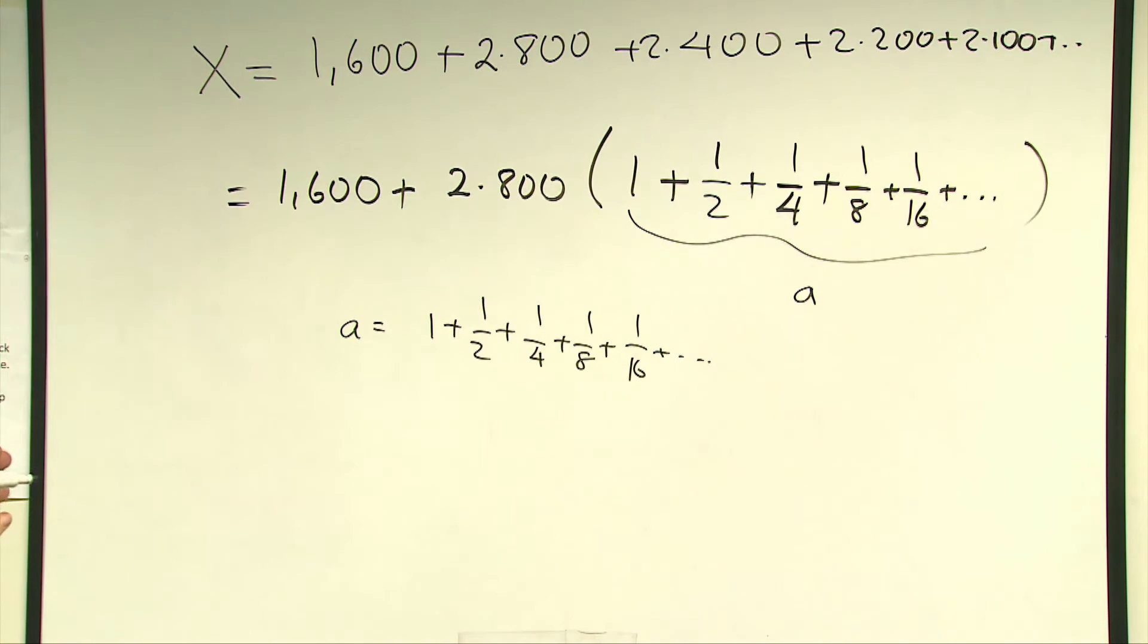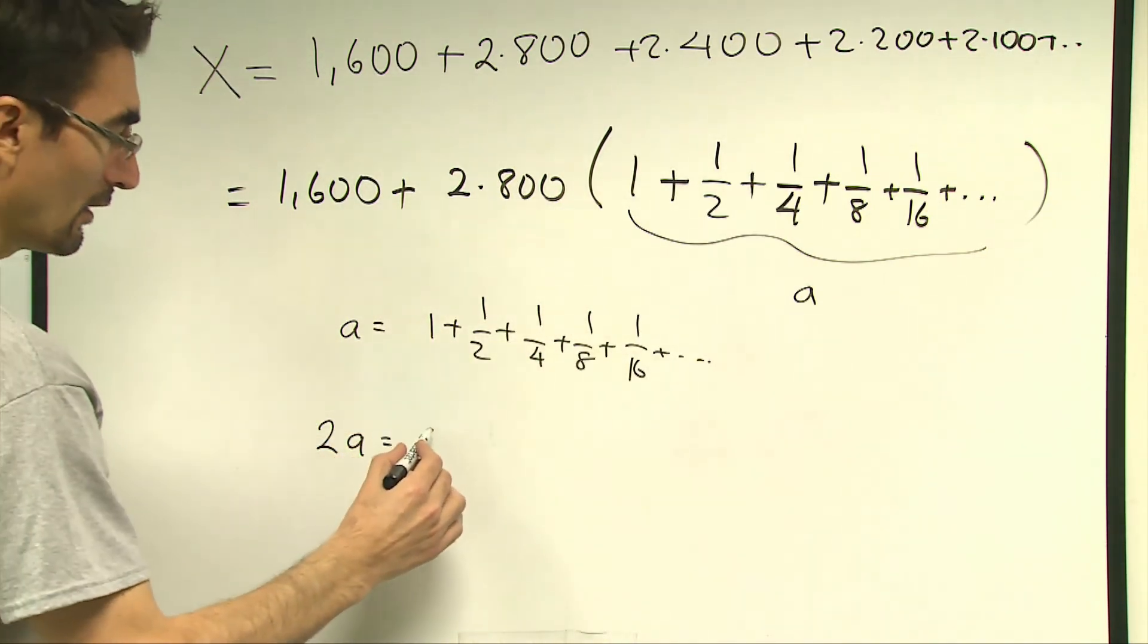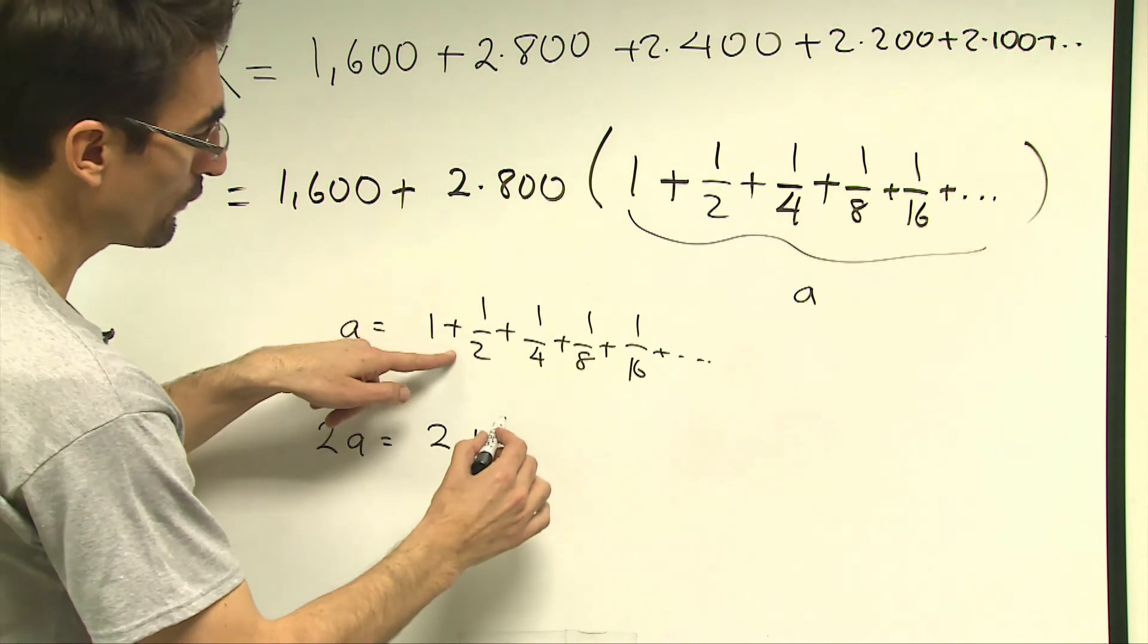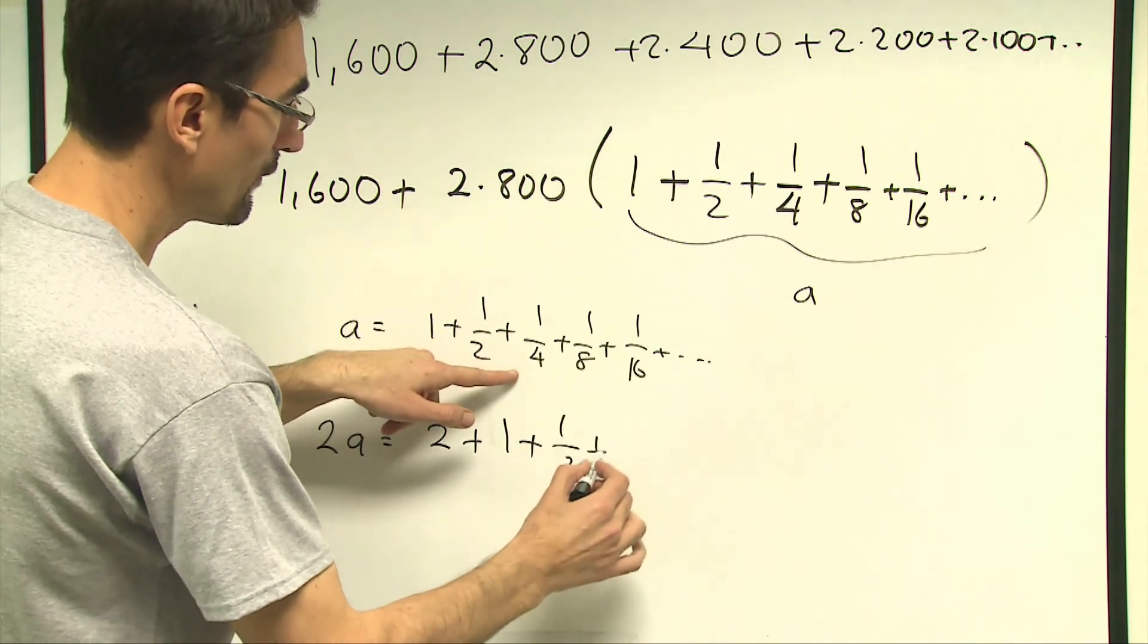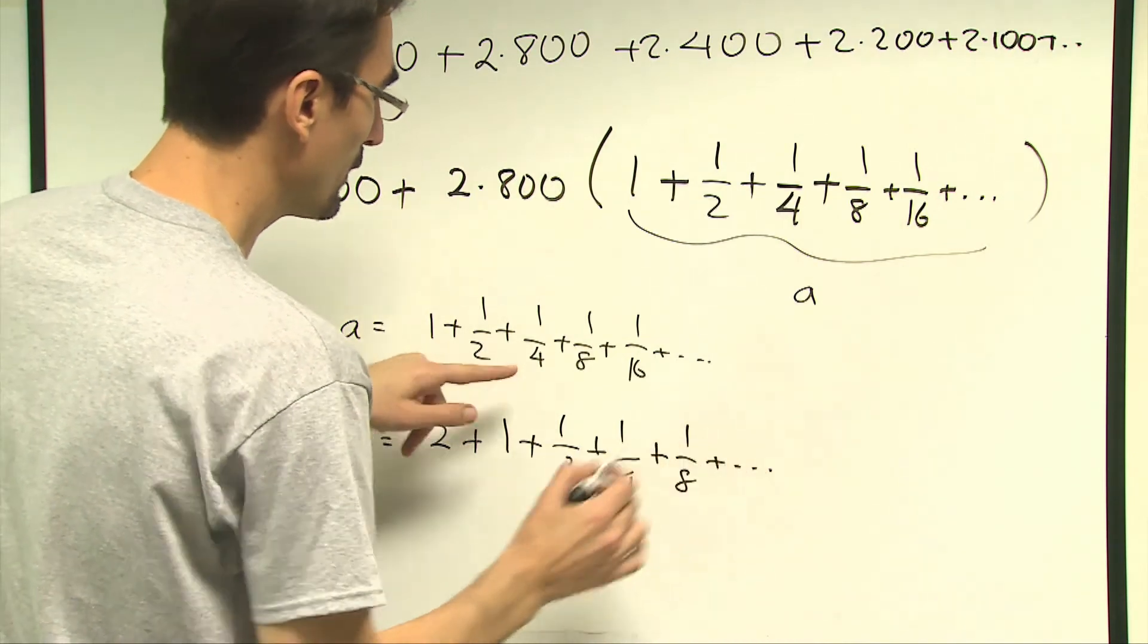If I double both sides of the expression this becomes 2a right, and if you multiply everything by 2 here, 2 plus 1 over 2 times 2 is equal to 1, 1 over 4 times 2 is 1 half, 1 over 4, 1 over 8 and so on.